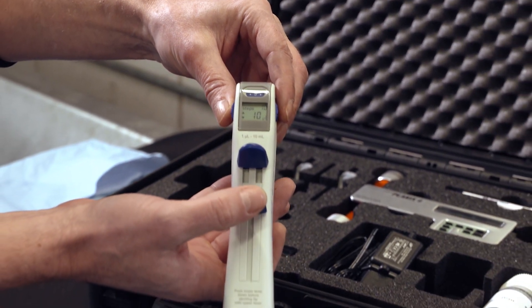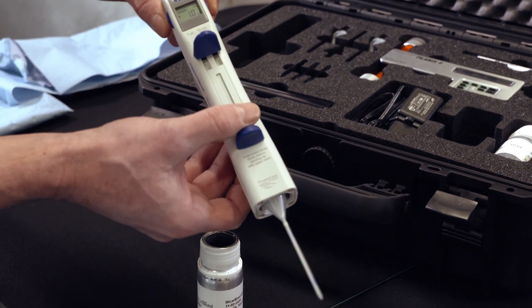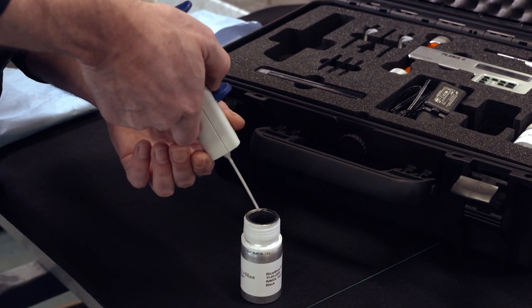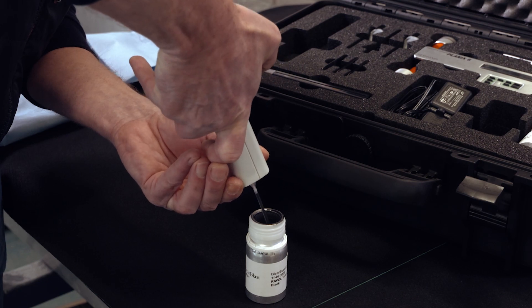The bottom slide is used to fill the pipette. Start with sliding it all the way down and then insert it into the testing liquid. Then pull the slide all the way up to fill the pipette.